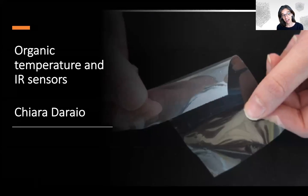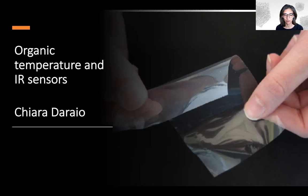My name is Chiara Daraio, and I'm a professor of mechanical engineering and applied physics at Caltech. My work is primarily focused on the design of new materials with different properties and functionalities that span from the mechanical domain to the electrical and sensing domain.